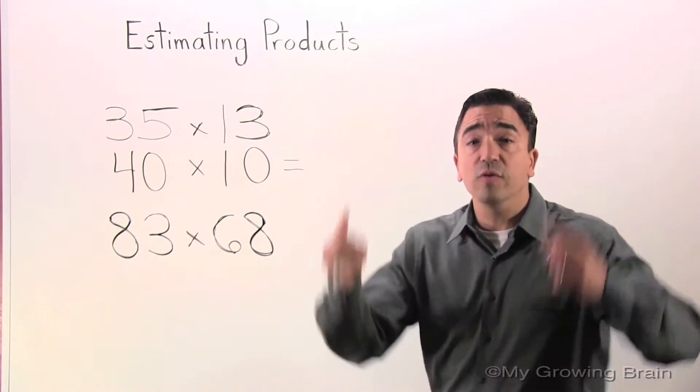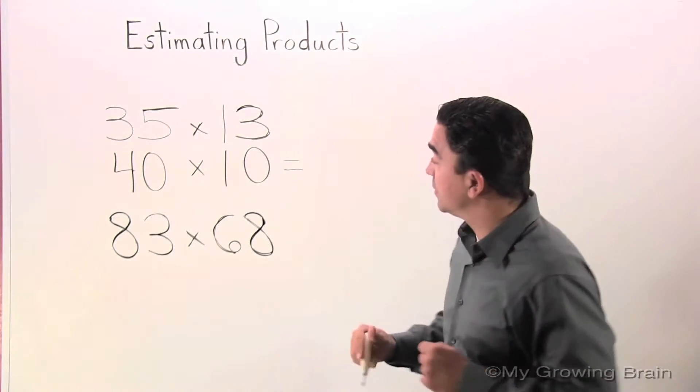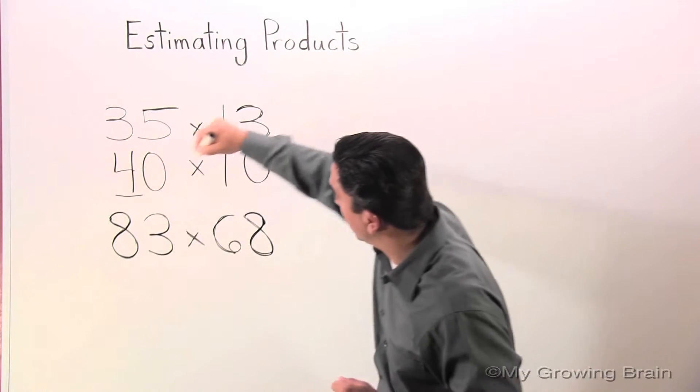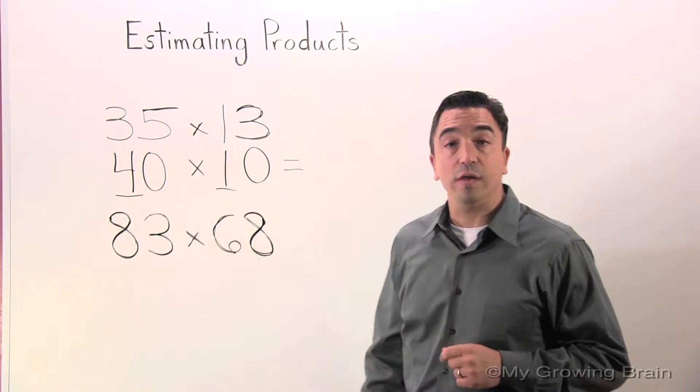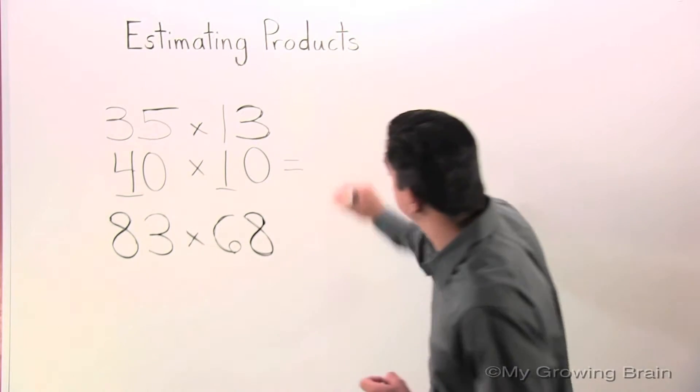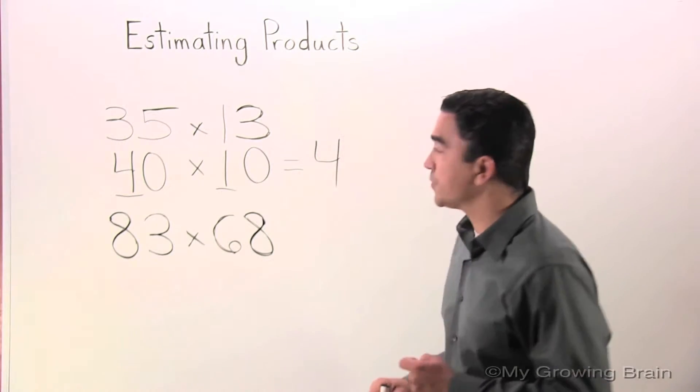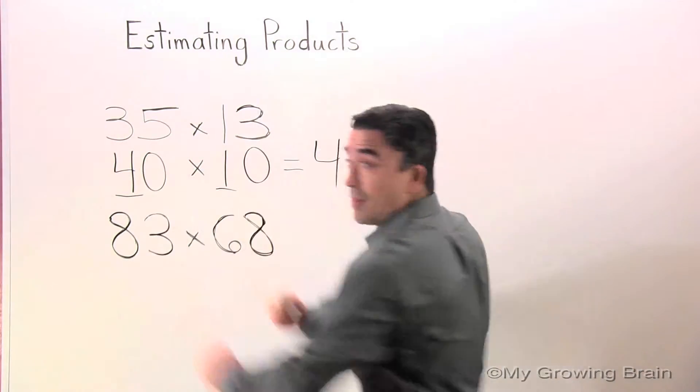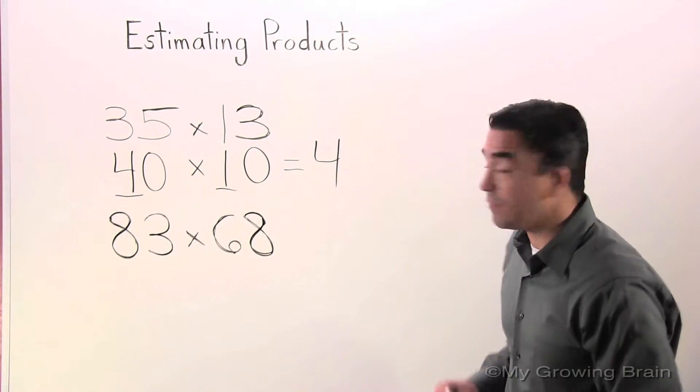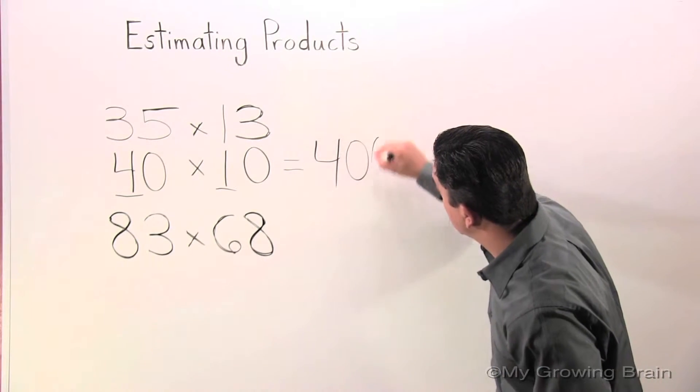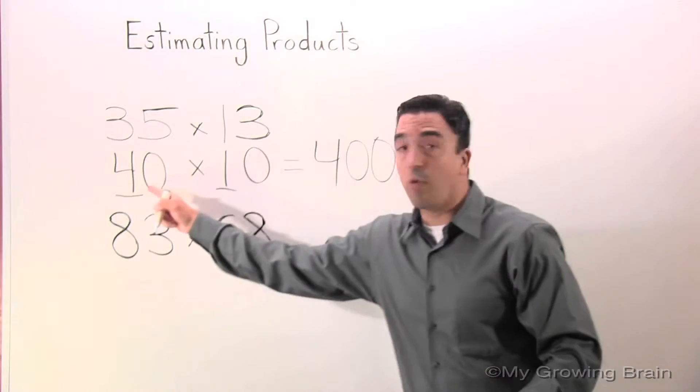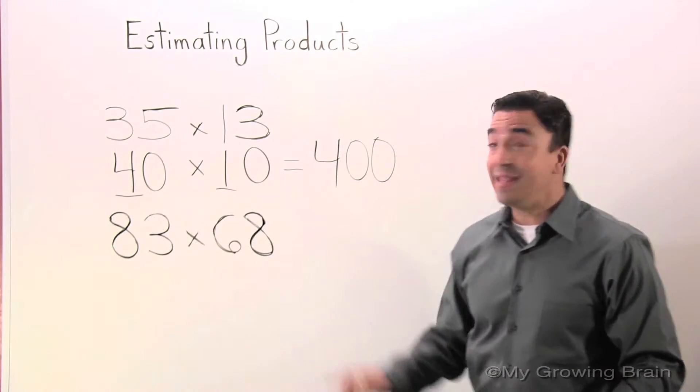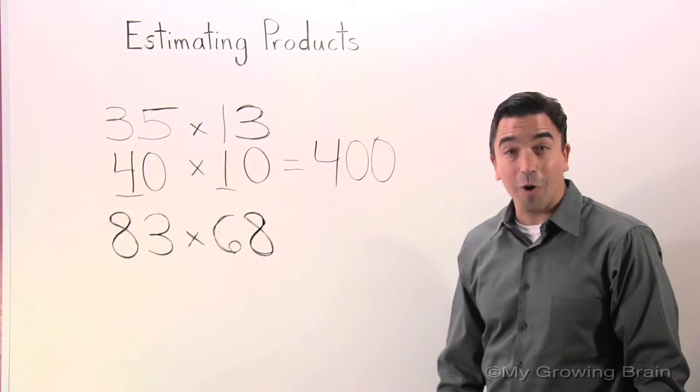Now I'm going to use mental math. So I'm going to multiply the 4 times the 1, which is 4. I have two zeros. I'm going to take them, put them right after the 4. 40 times 10 equals 400.